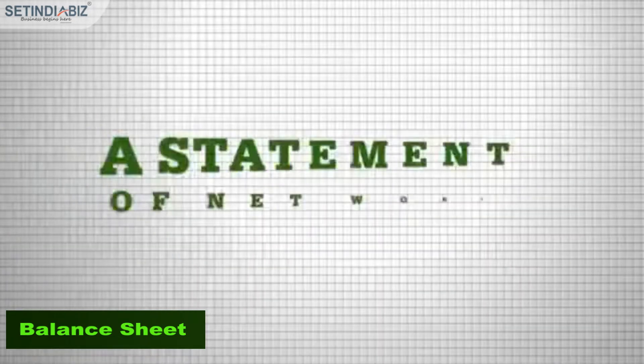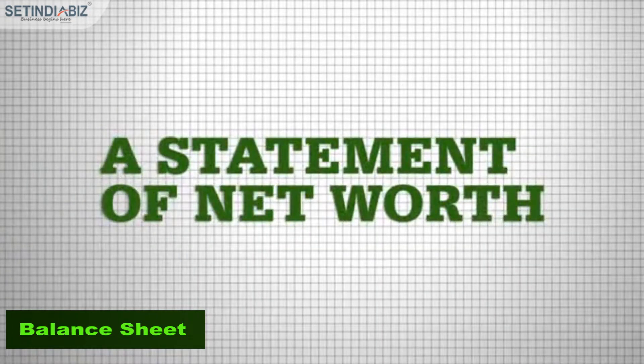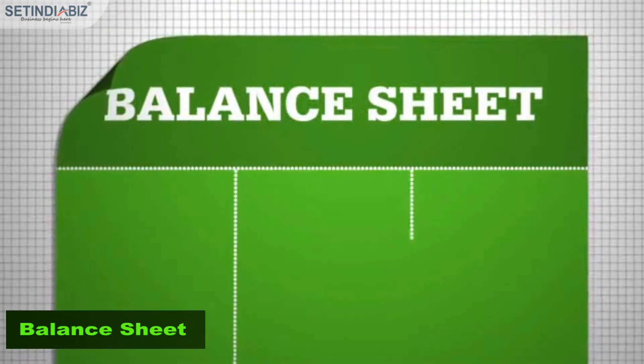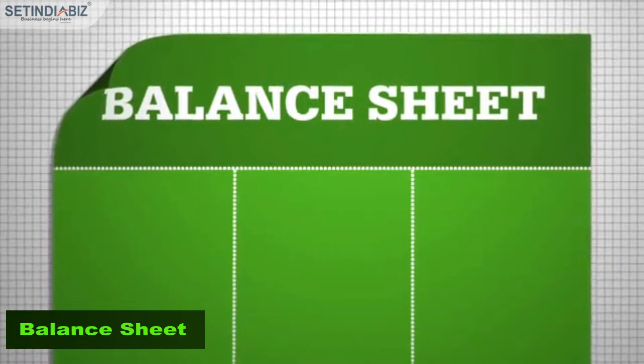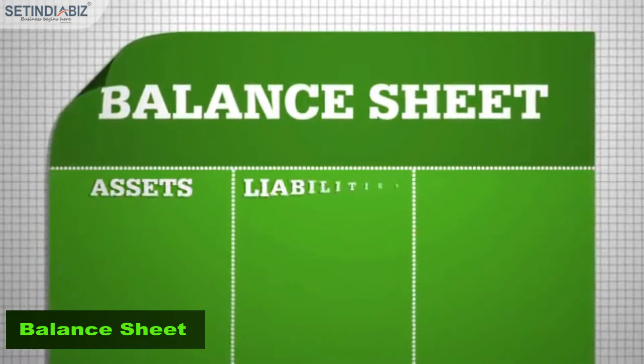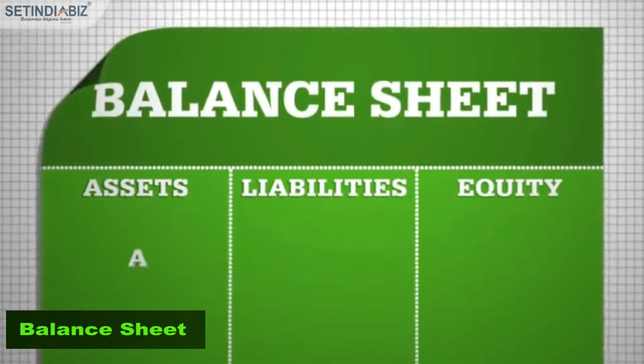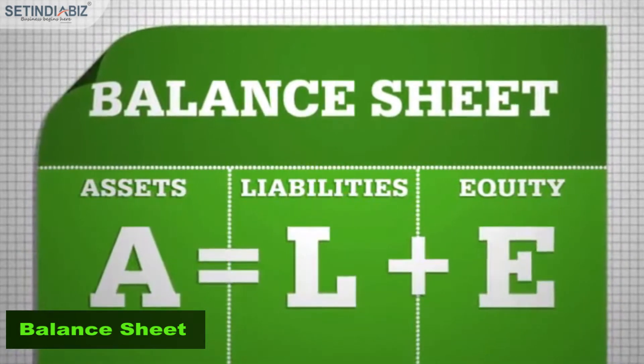A balance sheet is a statement of net worth. It's broken up into three sections: assets, liabilities, and equity. A equals L plus E.